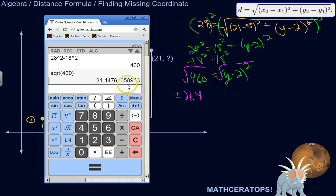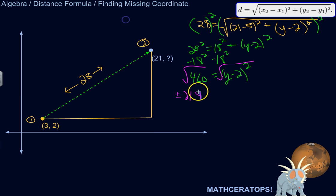what you'd get on the calculator is called the principal square root. But we also need to take into account that this could be actually negative 21.4 because if we were to square that, we'd get this 460. So it could be either way. Okay, so we'll try it in both cases.